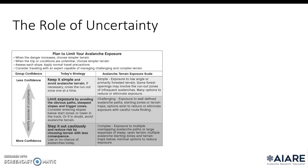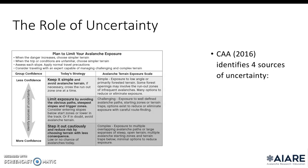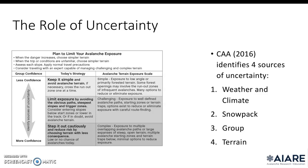It discusses the role of uncertainty in our backcountry decision making. I like to start many of my presentations with this graphic and talk about the different kinds of uncertainty that are out there. The Canadian Avalanche Association has identified four sources of uncertainty: weather and climate, snowpack, the group, and the terrain. As we make trip option catalogs, it's worth noting that we reduce the uncertainty surrounding our terrain, but we never eliminate 100% of the uncertainty.